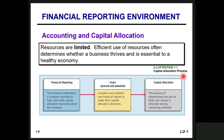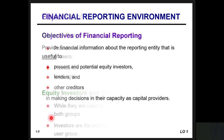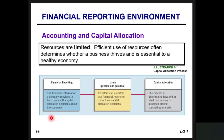Accounting and capital allocations: resources are limited, so efficient use of resources often determines whether a business thrives, and it is essential to a healthy economy. The capital allocation process shows financial reporting, then the users, and then their capital allocation decisions. Users — present and potential investors and creditors — use financial reports to make capital allocation decisions. Capital allocation is the process of determining how and at what cost money is allocated among competing interests.